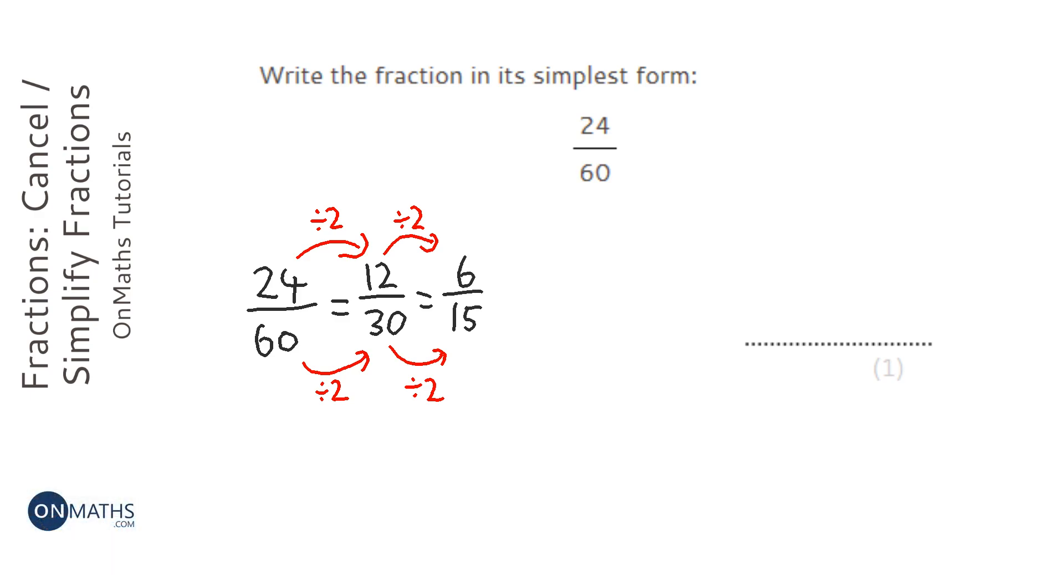Now you might think we need to stop there, but actually 6 and 15 are both in the 3 times table. So I can divide them both by 3, which will make 2 over 5. So my answer is 2 over 5.